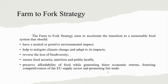The Farm to Fork strategy aims to accelerate the transition to a sustainable food system that should have a neutral or positive environmental impact, help to mitigate climate change and adapt to its impacts, reverse the loss of biodiversity, ensure food security, nutrition and public health, making sure that everyone has access to sufficient, safe, nutritious and sustainable food, preserve affordability of food while generating fairer economic returns, fostering competitiveness of the EU supply sector and promoting fair trade.